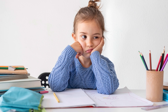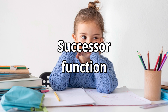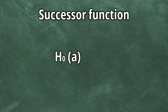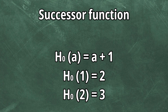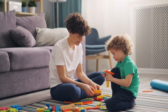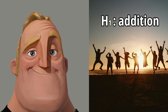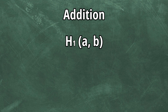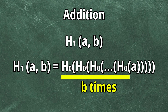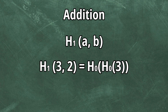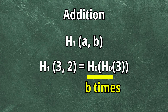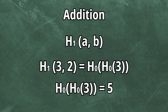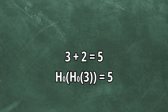Let's start from the very boring beginning by defining the operation called the successor function. Let's denote it as h0. It simply sends a natural number a to the next one. So h0(1) equals 2, h0(2) equals 3, and so on. The addition, denoted as h1(a, b), can be defined as using the successor function on number a repeated b times. So h1(3, 2) can be shown as h0(h0(3)), with h0 being used b times — which is 2 in this case — and h0(h0(3)) equals 5. In everyday life it's just easier to write 3 + 2 = 5 instead of pretending to be Santa Claus.